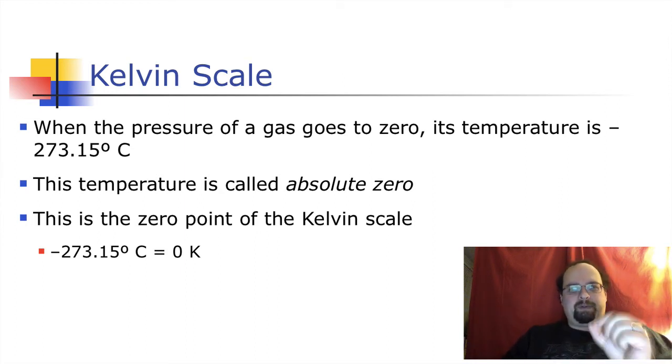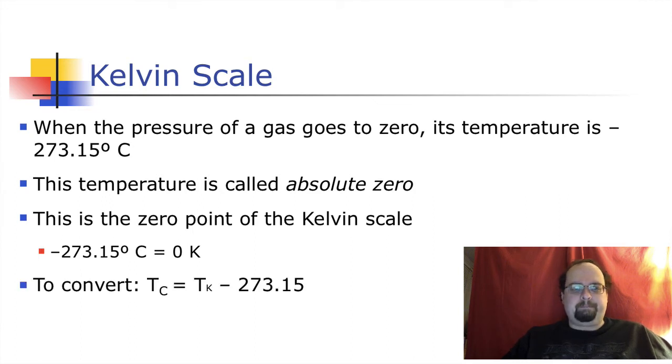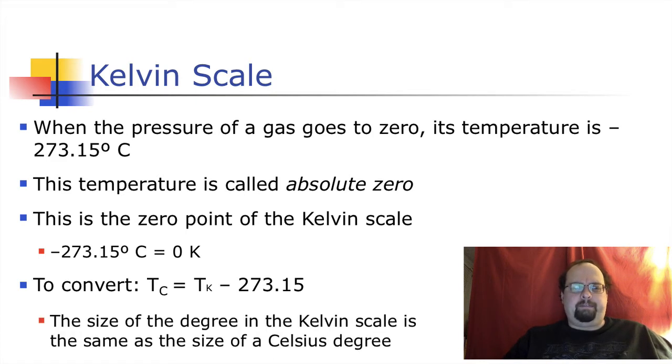We get very close. Point zero, many zeros close to it. So we do pretty well. So minus 273.15 degrees Celsius is zero Kelvin. If you want to convert, if you want to find the temperature in Celsius, just take the temperature in Kelvin and subtract that 273.15. And the degree size is the same, as I said.